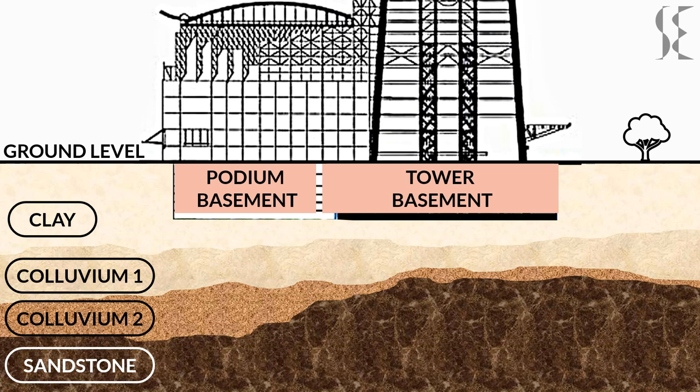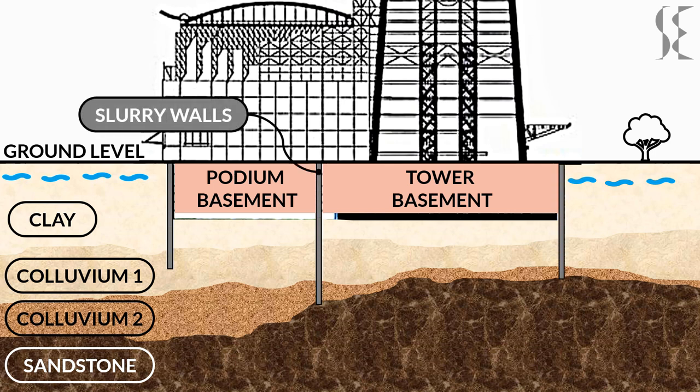The tower required a 21-meter deep basement. Water table at the site is 2 meters below the ground which would create huge uplift forces on the foundation of the building. Hence, slurry walls were constructed to lay the foundation below the tower. Slurry walls are deep walls constructed on site to prevent water and soil caving in while construction of foundation and excavation. These walls surround both the tower and podium and are 1.2 meters thick and up to 47 meters below the ground.